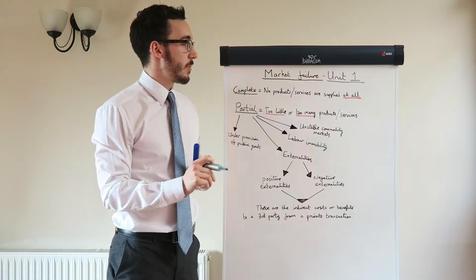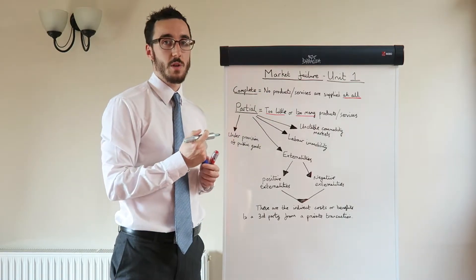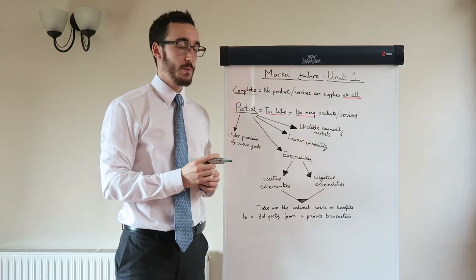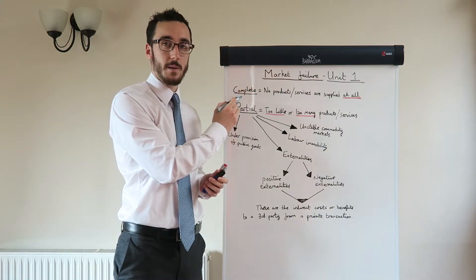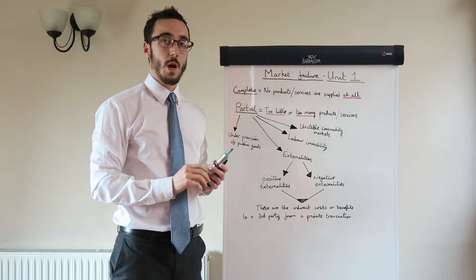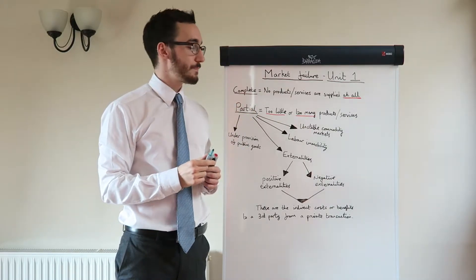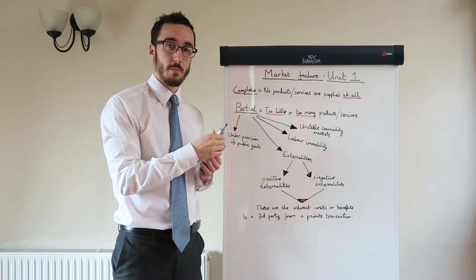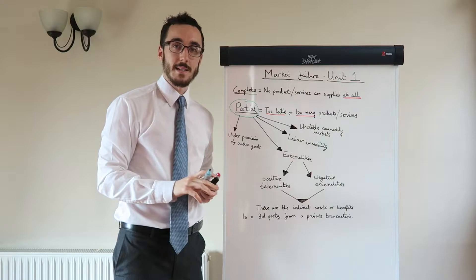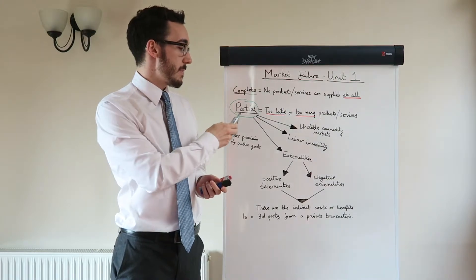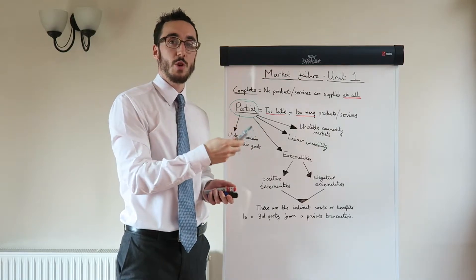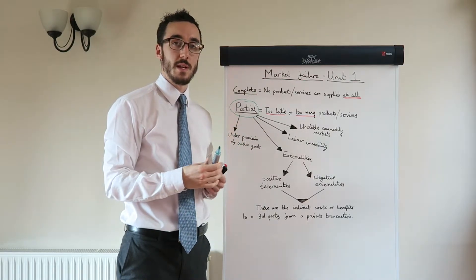Just as a quick recap, we have market failure, which is the Unit 1 topic. Remember, there are two different types of market failure. We have complete market failure, which is when there are no products or services produced at all in the market. But we're going to be focusing on partial market failure, and that is what externalities come under. Partial market failure is when there's either too little or too many goods or services produced in the market.